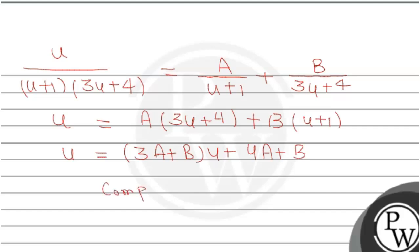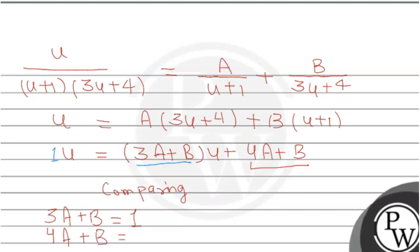Comparing coefficients on both sides: for the u term, 3A + B = 1; for the constant term, 4A + B = 0. We now solve for A and B from these two equations.